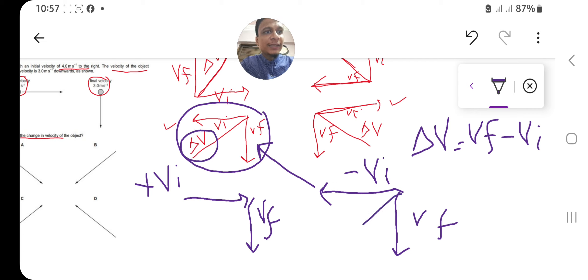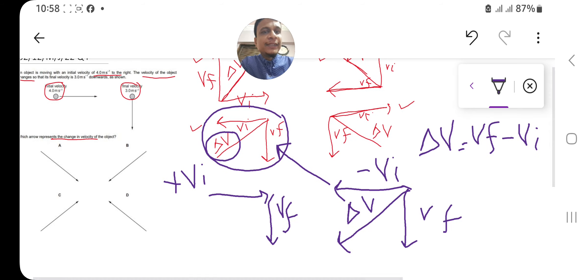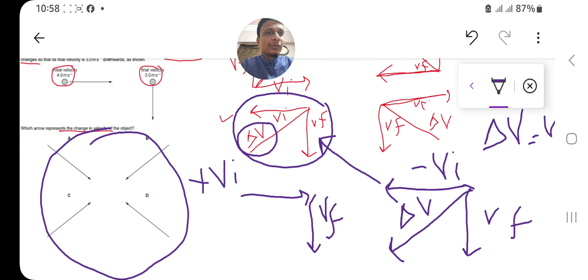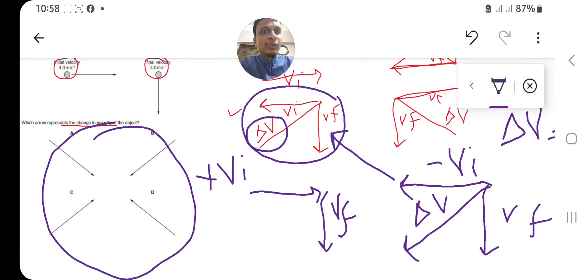So this will be the change in velocity. All these arrows represent the change in velocity. When you just match this, you know that only this one, option B,